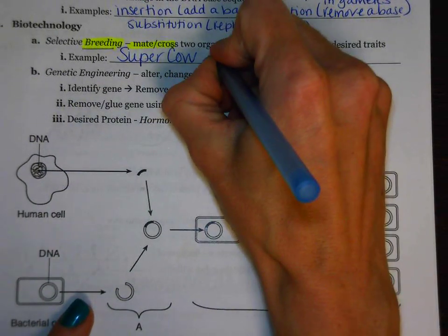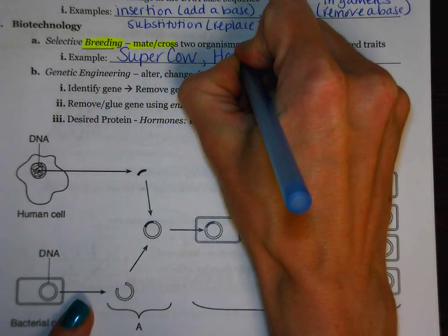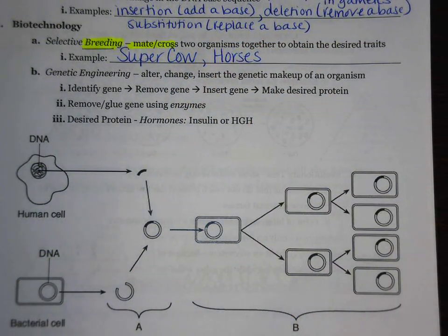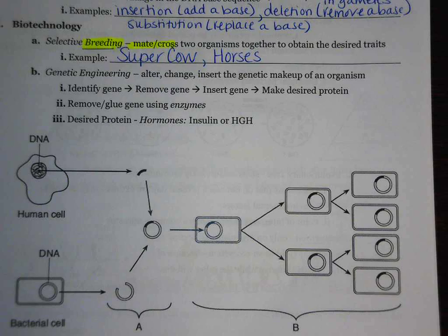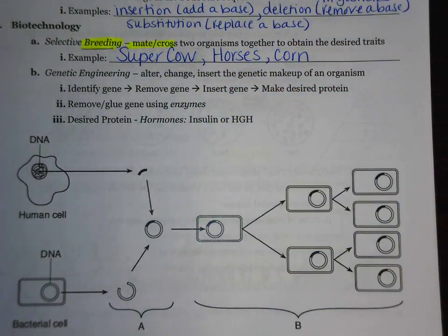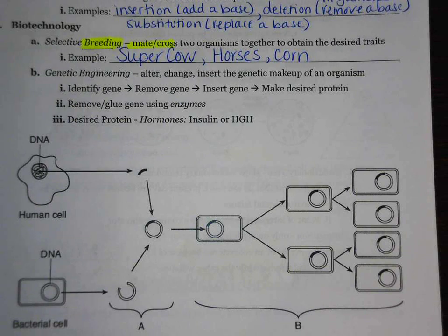Other examples we're familiar with are breeding horses. You find two fast horses, a male and a female, make them mate, and then the offspring will hopefully also have that desired characteristic. We also talked about corn and how corn started off as an organism known as teosinte. Over years and years of selective breeding, we now have edible corn that has large sweet kernels.